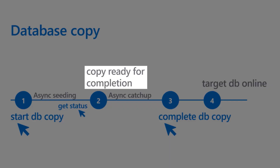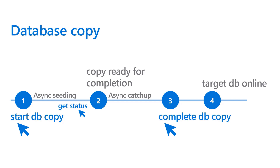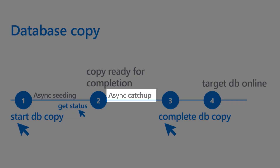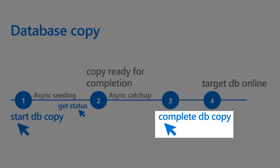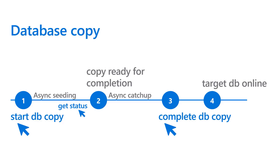Once completed, we have a 'copy ready for completion' status. Within the next 24 hours, the user can explicitly complete the database copy operation. Until that happens, all changes from the source are being replicated to the target database. At the moment when the user chooses to complete the copy, the link between source and target database is broken, and the target database for the first time becomes online and ready for read and write workload.